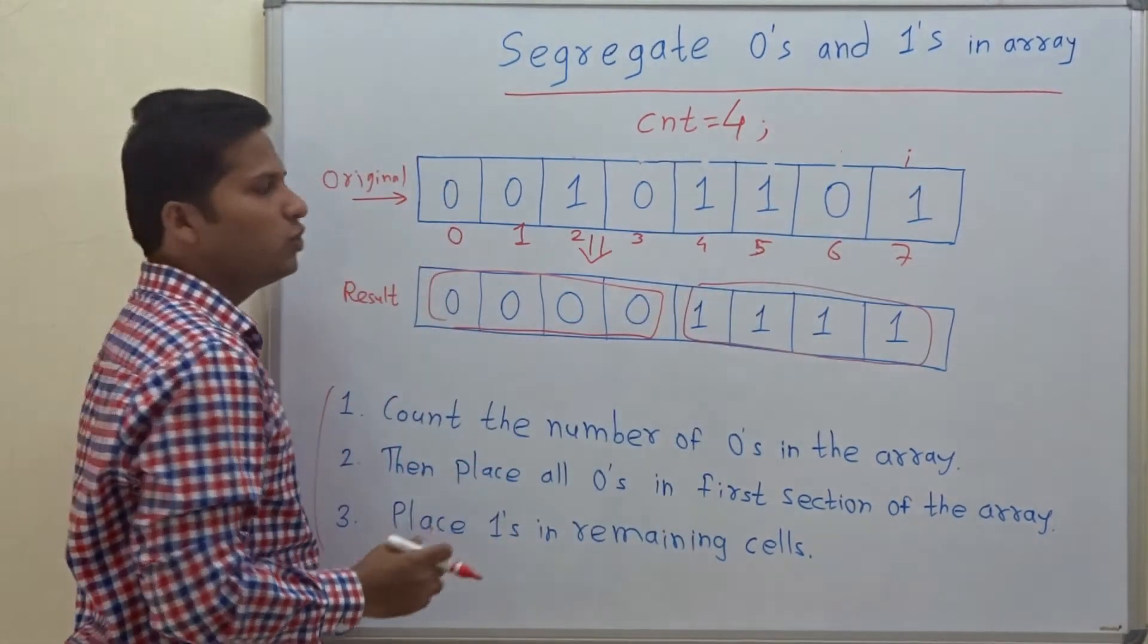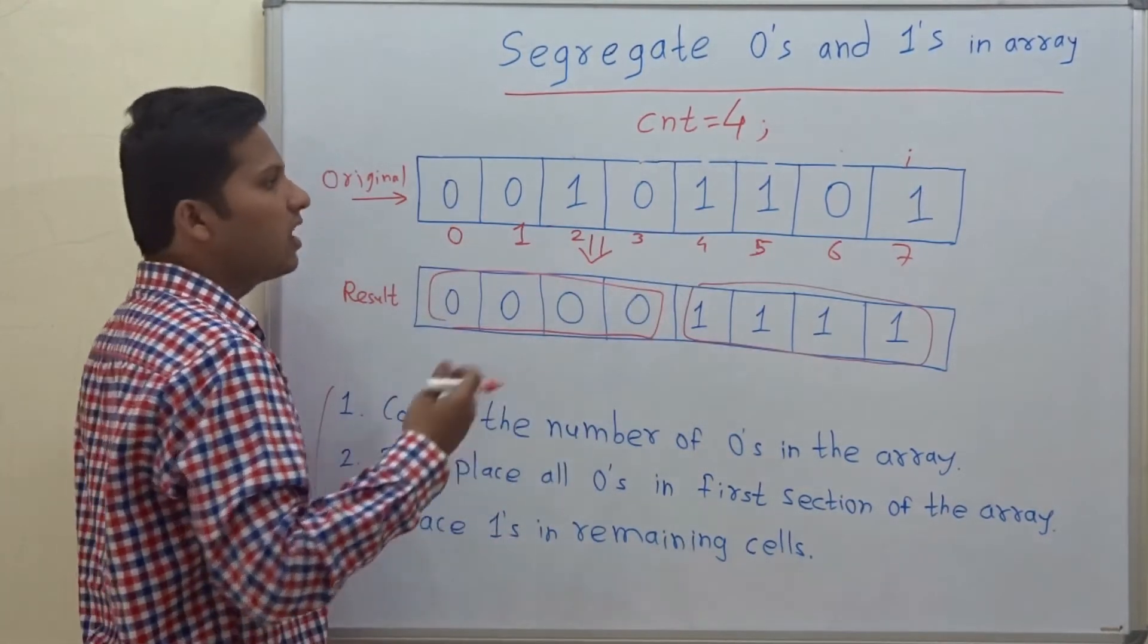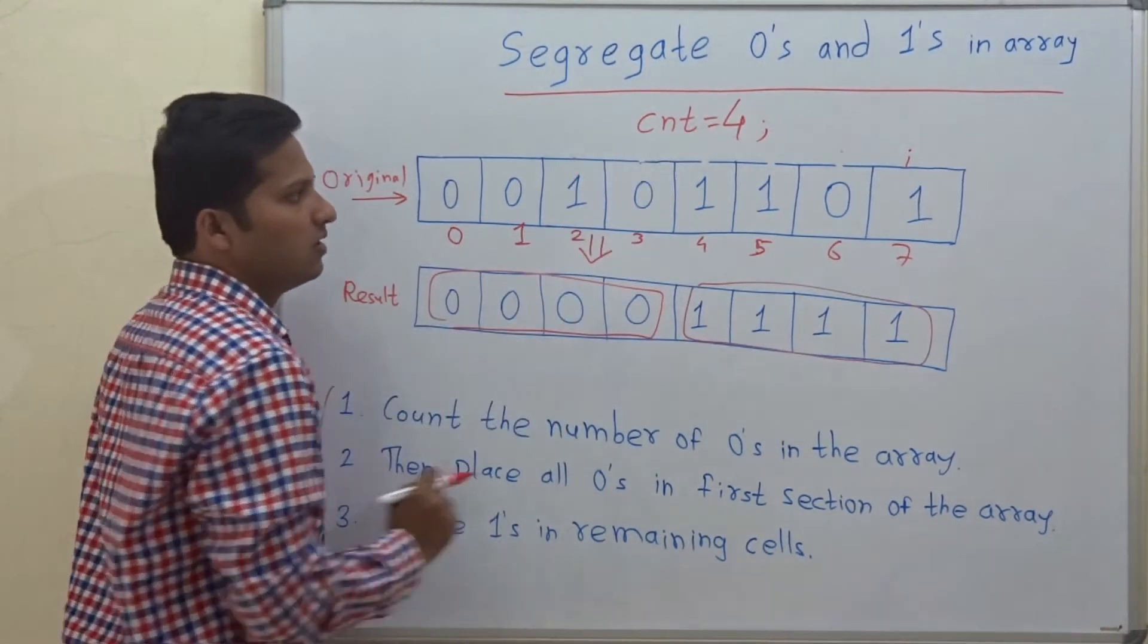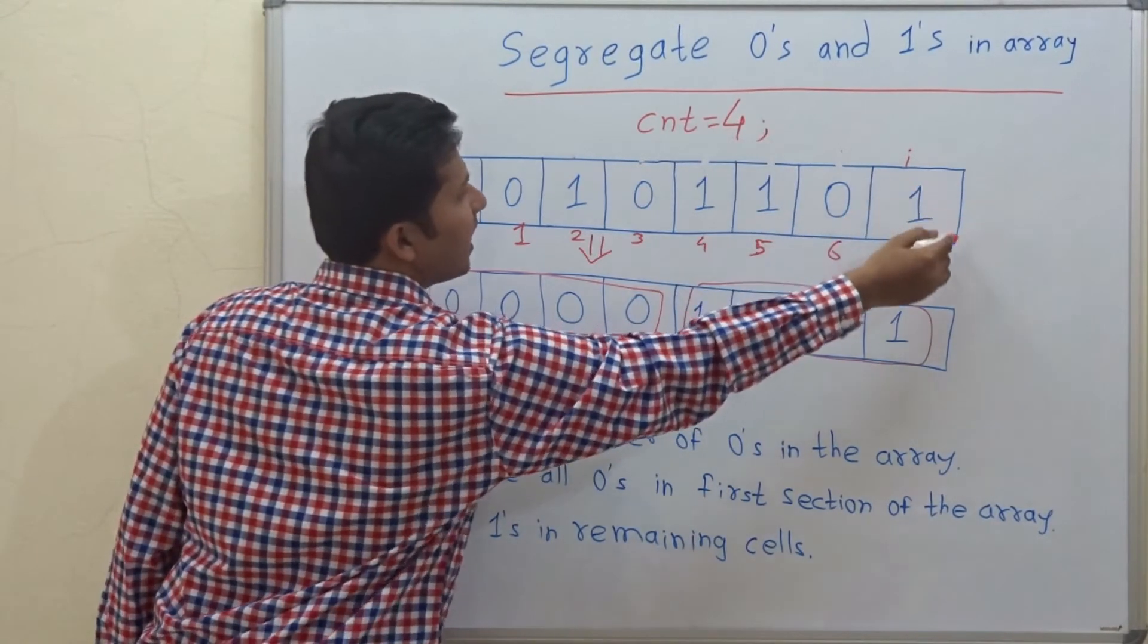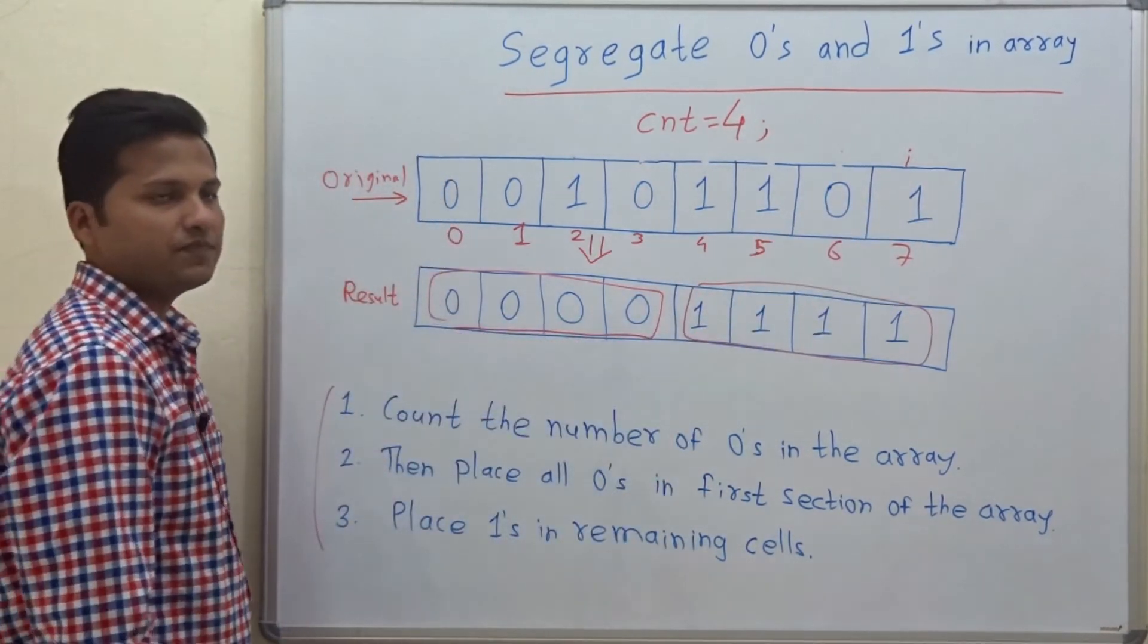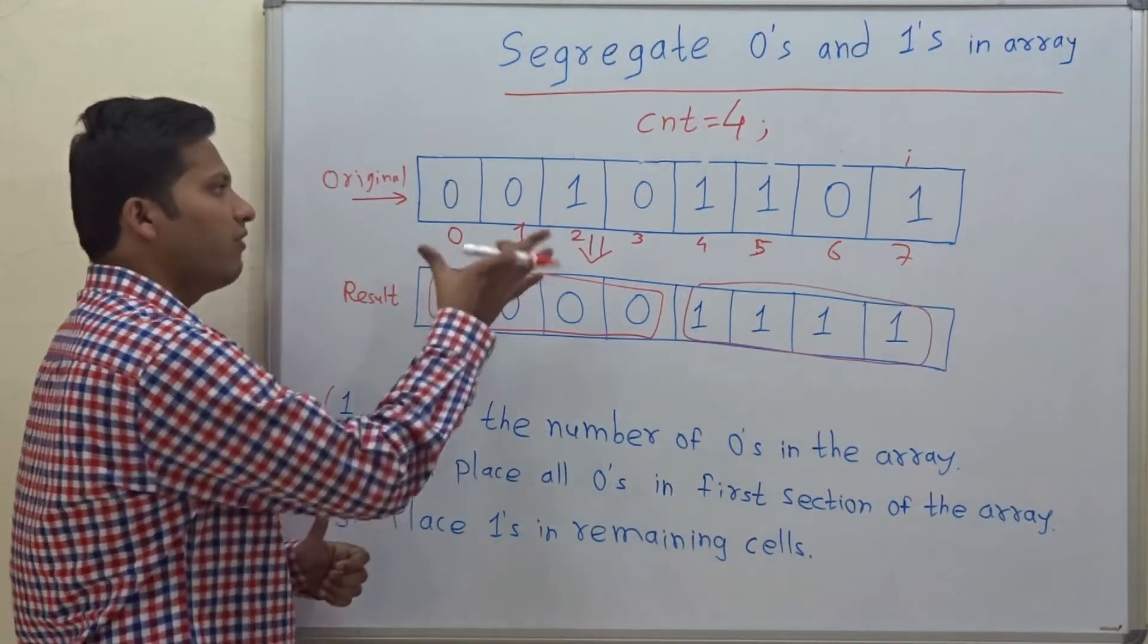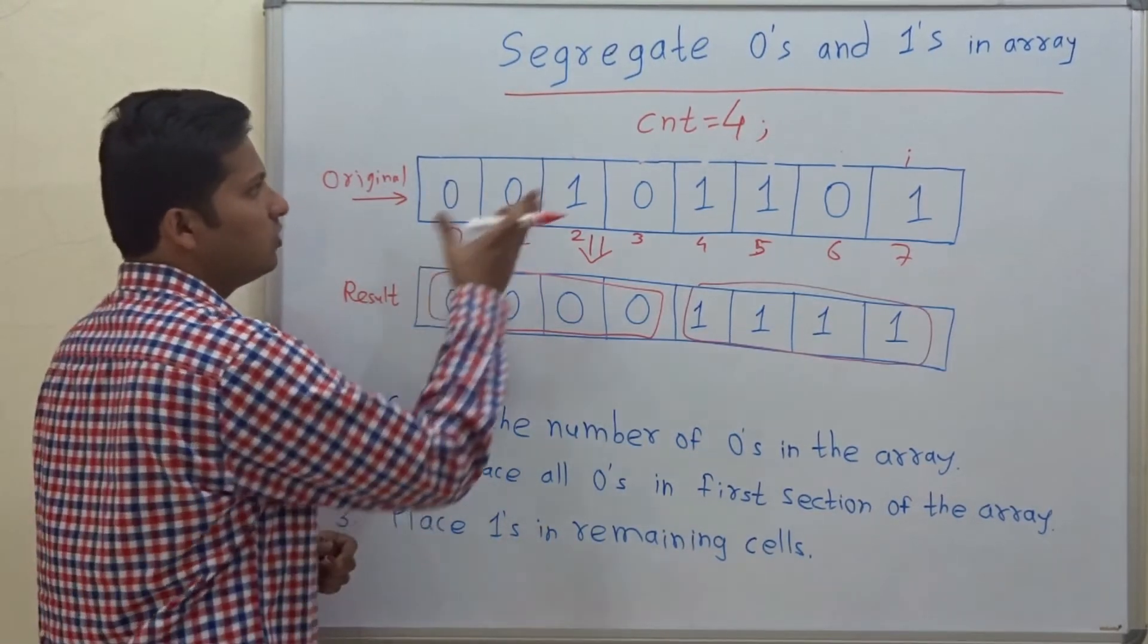So in short you have to traverse the array and count the number of zeros. Now it is 1. So counter will not be incremented and the array is over. So we have counted the number of zeros in this array.